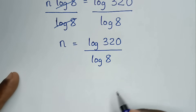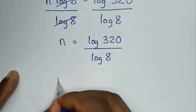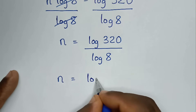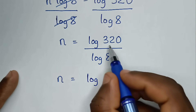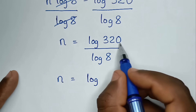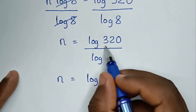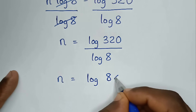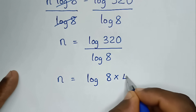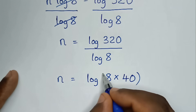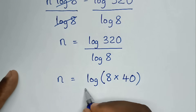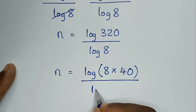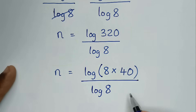Then in the next step, it will be n is equal to log of 320, where 320 is the same as 8 times 40, in brackets over log of 8.